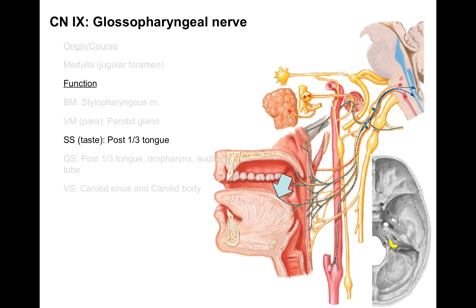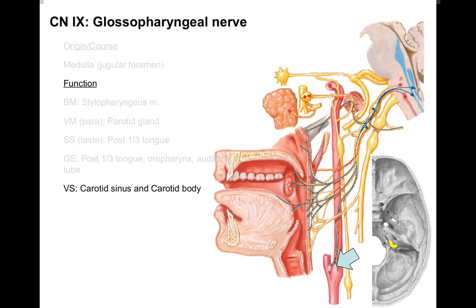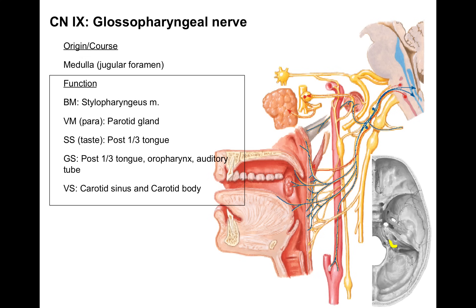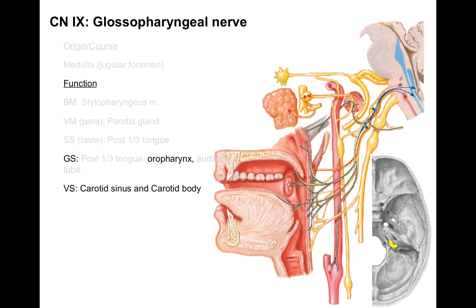It also carries taste to the posterior third of the tongue, as well as general sensation to the posterior third of the tongue, the oral pharynx along the back of your throat, and part of the opening of your auditory or eustachian tube. It also does visceral sensory from the carotid sinus and carotid body: the carotid sinus for baroreceptor function measuring changes in blood pressure, and the carotid body as a chemoreceptor measuring changes in CO2 and O2 in the blood.